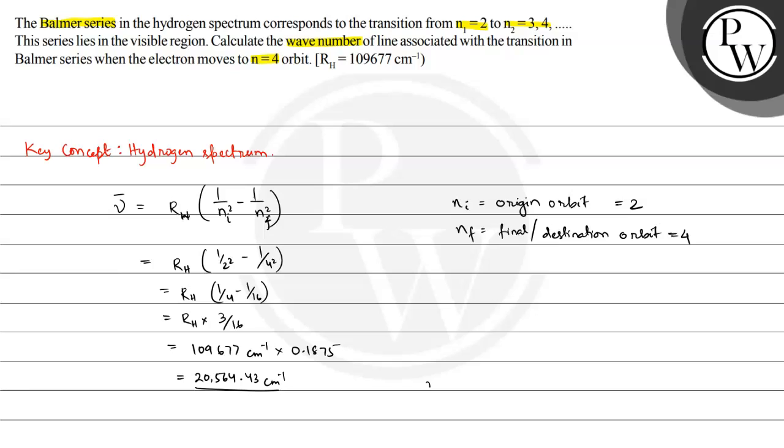So we can write that the wave number of transition is equal to 20,564.43 cm⁻¹. This is the required answer, and I hope you understood the concept well. Best of luck.